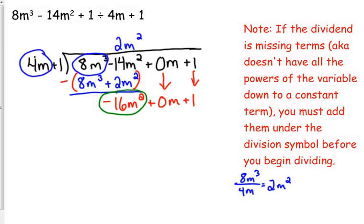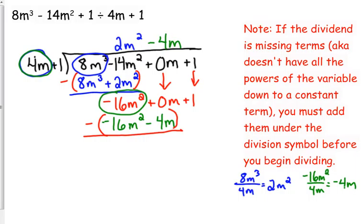Now, we are dividing negative 16m squared by 4m. That gives us negative 4m. Negative 4 times positive 4 is negative 16, m times m is m squared. Negative 4m times 1 is negative 4m. Here is where it makes a difference. That's why you need that 0 there, because otherwise you're going to be trying to do 1 minus 4m, and you can't do that, because they're not like terms. Negative 16 minus negative 16 is 0. 0 minus a negative 4 makes that positive 4m.